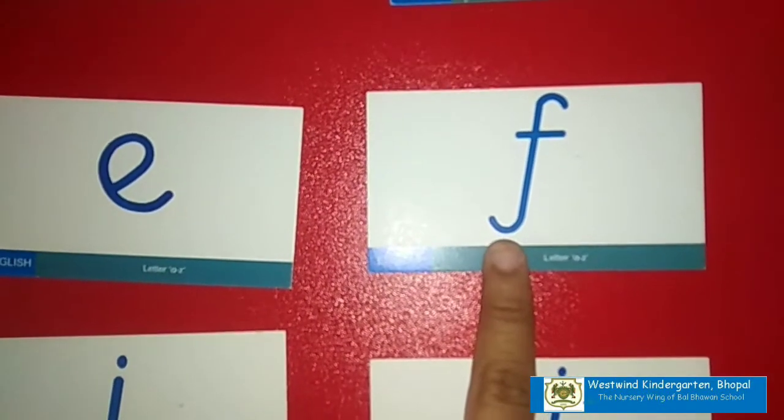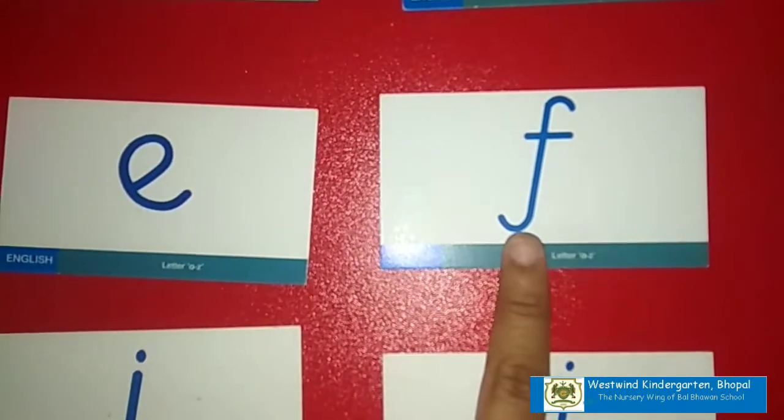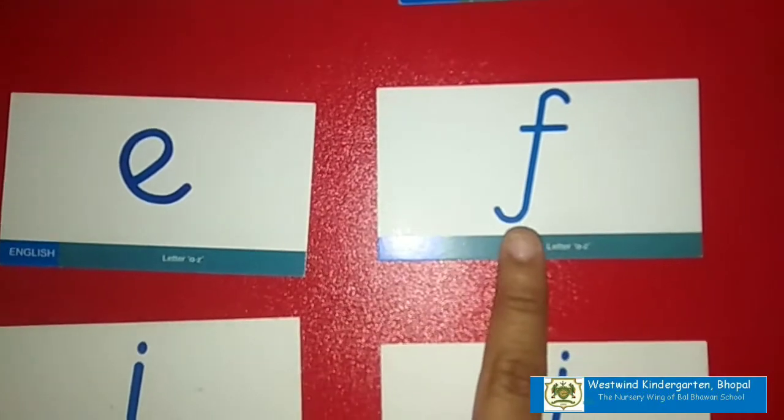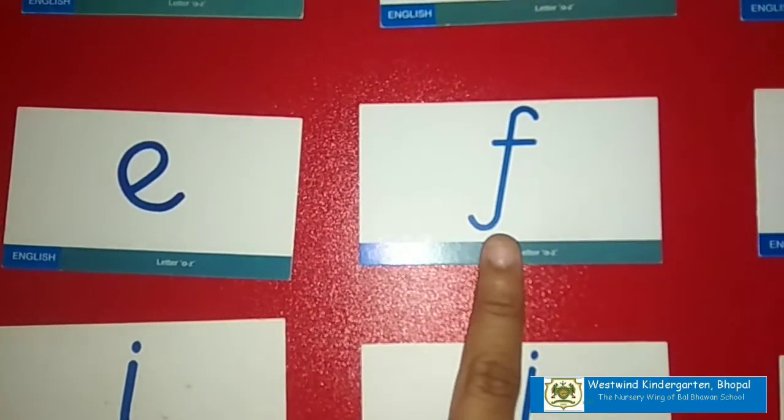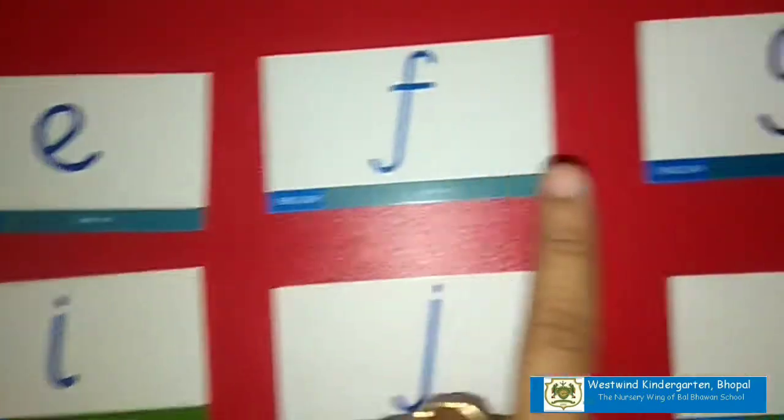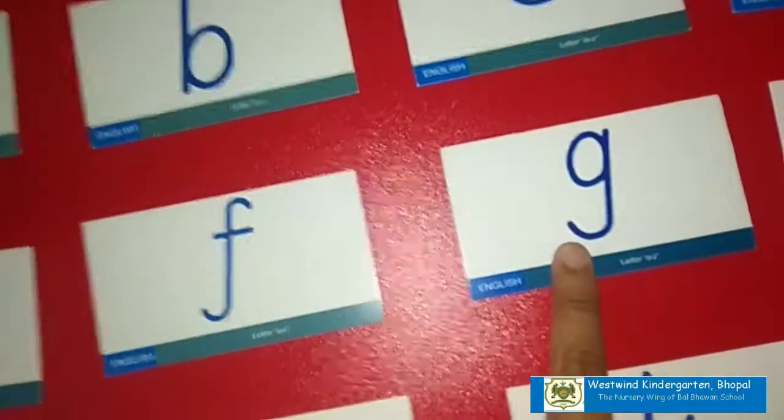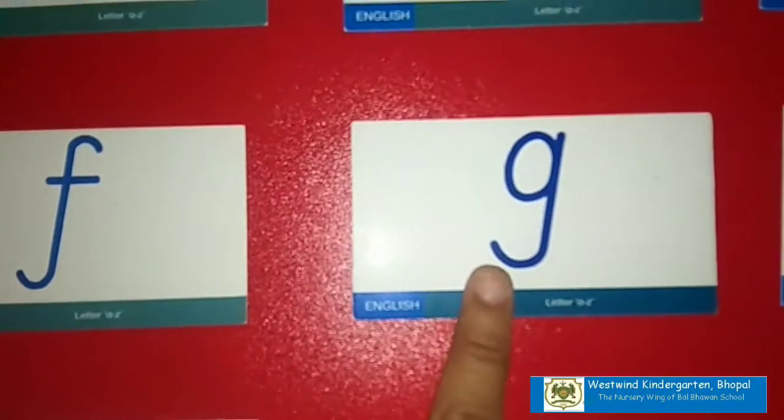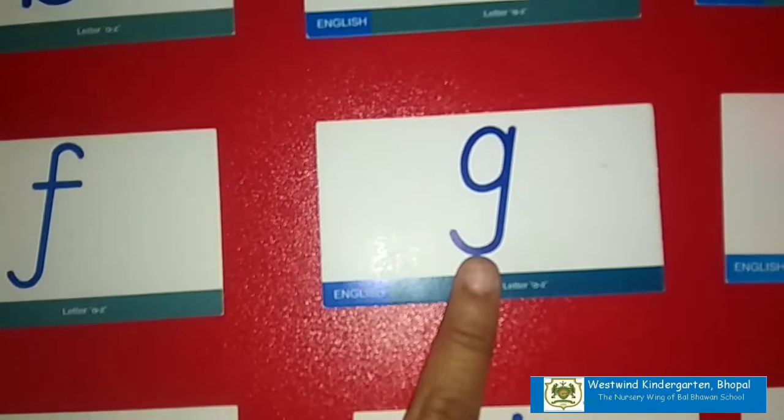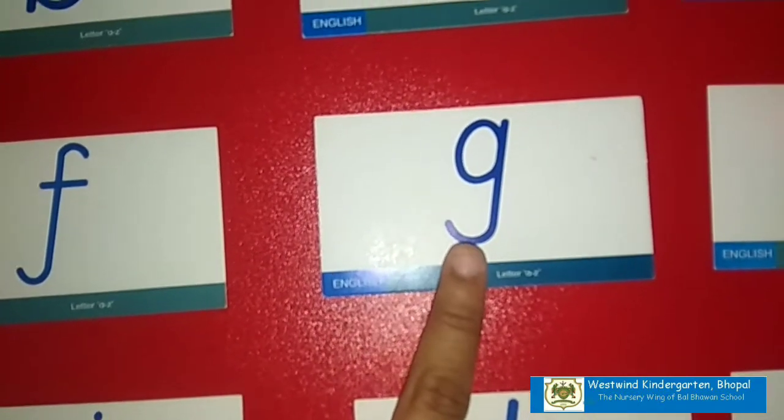Next, we have F. Sound of letter F is F. And then we have letter G. And the sound of letter G is G.